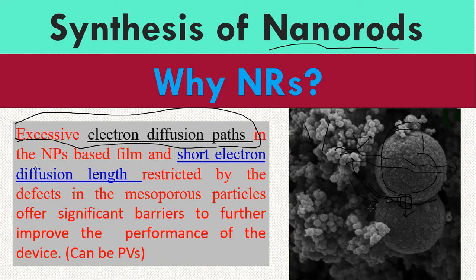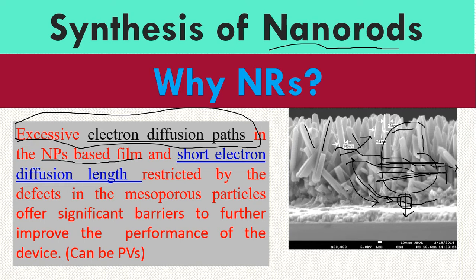The second problem with nanoparticle-based film electrodes is short electron diffusion length. For instance, when an electron passes from here to the electrode, the distance is short. We need an electrode material grown vertically — like vertical nanorods on FTO or TCO — where electrons travel directly to the collection site. These vertical nanorods can be grown using the hydrothermal method: take the precursor in solution, put it in an autoclave in the oven, and it gives you this shape.